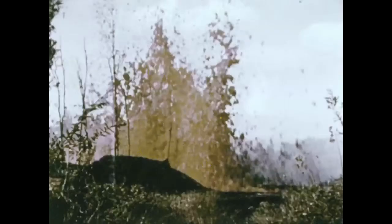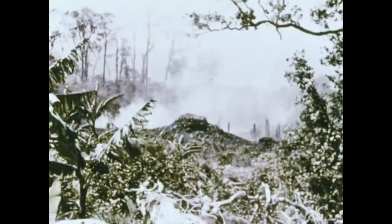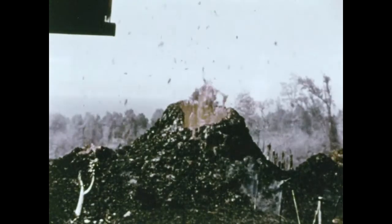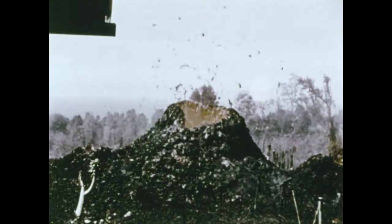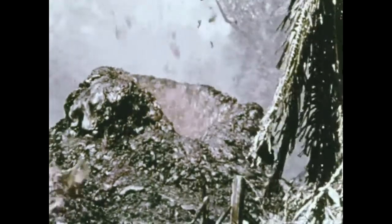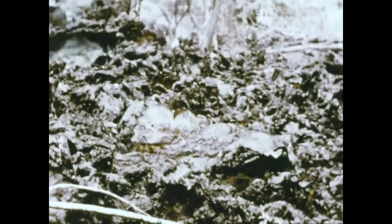Escaping gases hurl melted rock or lava high into the air. This is called a spatter cone. The temperature of this molten rock is greater than 1,000 degrees Celsius. The rock bubbles and boils as it oozes from volcanic vents.